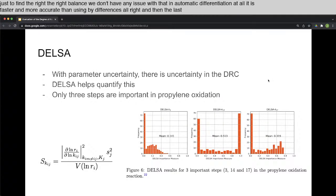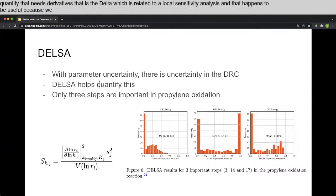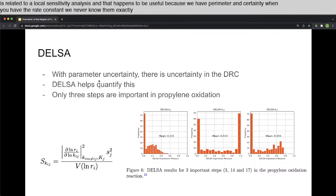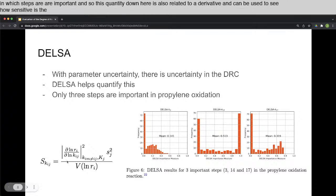And then the last thing we looked at was a different quantity that needs derivatives, that is the DELSA, which is related to a local sensitivity analysis. And that happens to be useful because we have parameter uncertainty when you have the rate constants, we never know them exactly. And that uncertainty can lead to uncertainty in the DRC or in which steps are important. And so this quantity down here is also related to a derivative and can be used to see how sensitive is the importance of a step with respect to the parameter estimate.